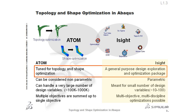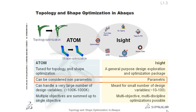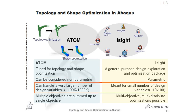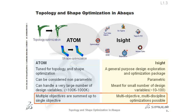Whereas iSight is a general-purpose design exploration and optimization package, ATOM has been tuned for topology and shape optimization only. iSight is designed to parametrically vary any input, whereas ATOM's optimizer is considered non-parametric. iSight is meant for a small number of design variables, but ATOM has been tuned to handle very large numbers of design variables. In ATOM, multi-objectives are always summed to a single objective. In iSight, more sophisticated multi-objective techniques are available. Therefore, iSight and ATOM complement each other very nicely.